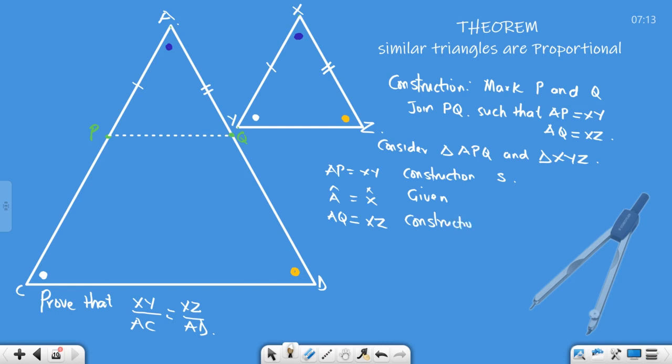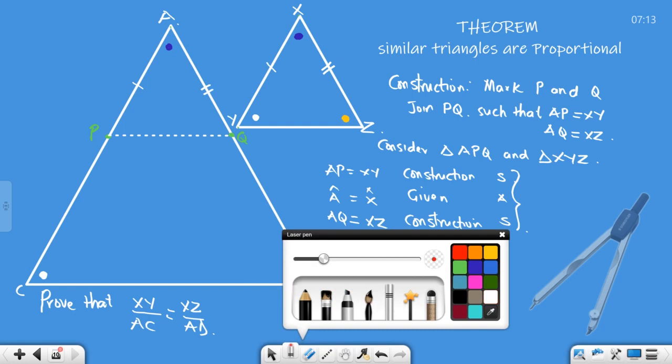Now what have we proven? We have proven that they are congruent: side-angle-side. Therefore, triangle APQ is congruent to XYZ.